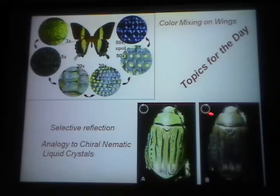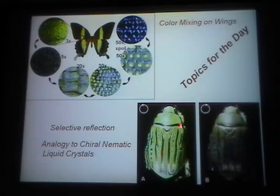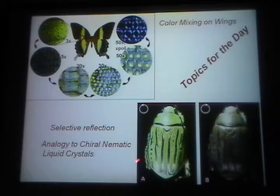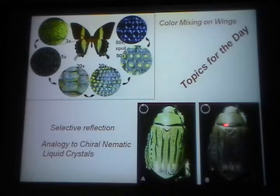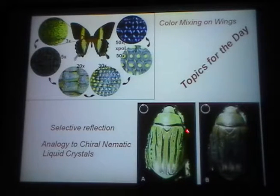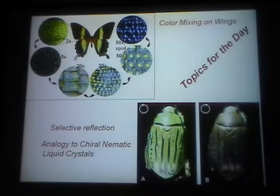This one reflects circularly polarized light. Viewed with either unpolarized light or a left circular polarizer, you see the color. But if you were to look at it with the right circular polarizer, it looks dull gray — you don't see the color. So this provides a highly circularly polarized reflection.